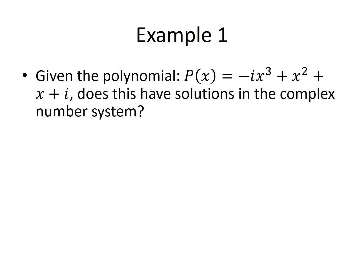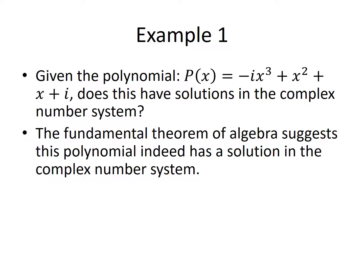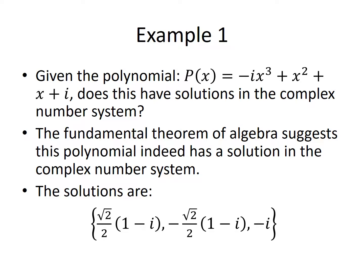Given the polynomial p of x equal to negative i times x cubed plus x squared plus x plus i, does this have solutions in the complex number system? The answer is yes. The fundamental theorem of algebra suggests this polynomial indeed has a solution. It fits the definition of a polynomial with complex coefficients, therefore it has complex solutions. In fact, the solutions are root 2 over 2 times (1 minus i), negative root 2 over 2 times (1 minus i), and negative i.